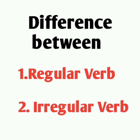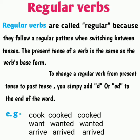Three forms of verb करने से पहले, आपको regular verb और irregular verb की बीच में difference पता होना चाहिए. तो सबसे पहले हम इसे clear कर लेते हैं. सबसे पहले बात करेंगे regular verbs के बारे में. जो regular verb होती है, उनका pattern tense switch करने पर change नहीं होता.